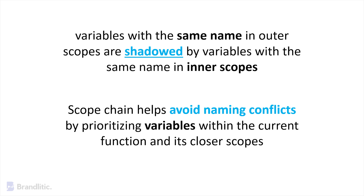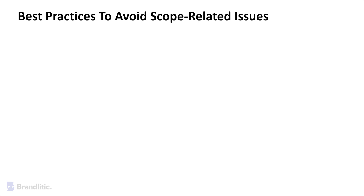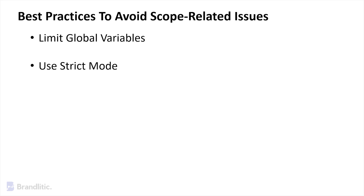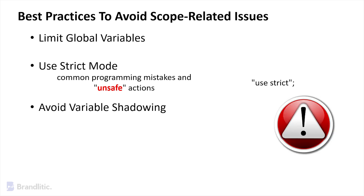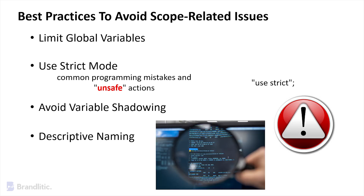Now that we know the fundamental types of scopes in JavaScript, let's learn about best practices. To avoid common scope-related issues: number one, limit global variables. Number two, use strict mode — strict mode helps catch common programming mistakes and unsafe actions, including accidentally creating global variables. To enable strict mode, add the appropriate line to the top of your script. Number three, avoid variable shadowing, as reusing variable names in nested scopes can lead to confusion and unexpected behavior — use descriptive variable names to minimize shadowing and improve readability. Number four, use descriptive naming, which is especially crucial in global scope where variable names can affect multiple parts of your code and improve maintainability.